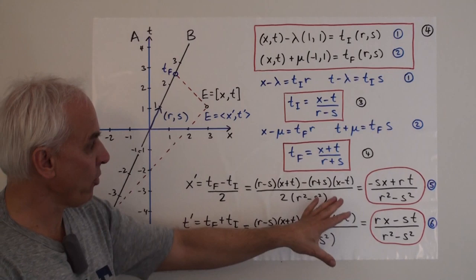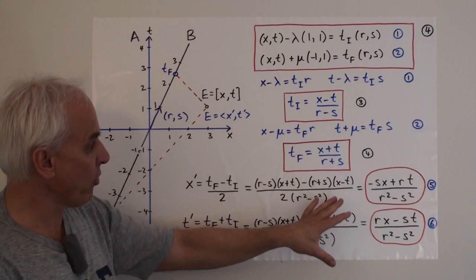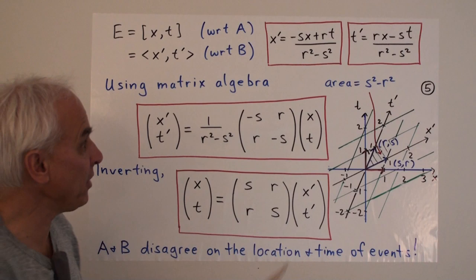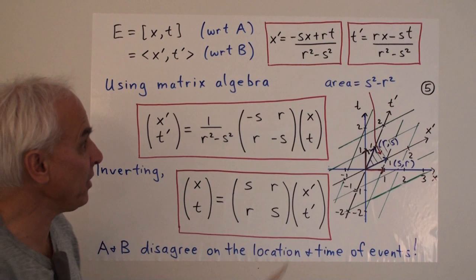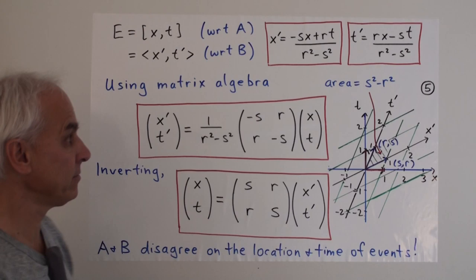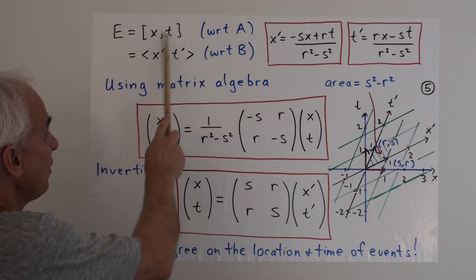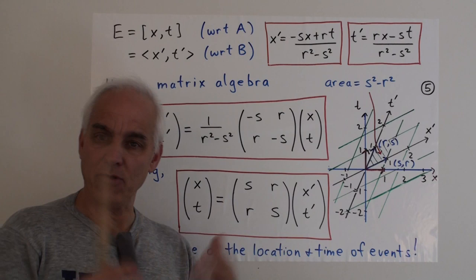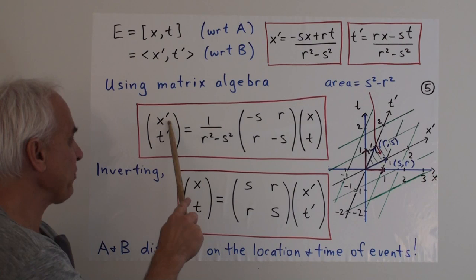Please make sure that you understand the derivation of everything on this page — it's very important. Understand the whole story: go through it, check the algebra, make sure you understand what the geometrical argument is. This is the essence of Special Relativity in a sense. So let's have another look at those two formulas we derived. There's the formula for X' in terms of X and T, and in terms of R and S — the position of the vector that describes B's world line, in fact describes the clock on B's world line. So the coordinates of an event E with respect to A are X and T, and with respect to B are X' and T'.